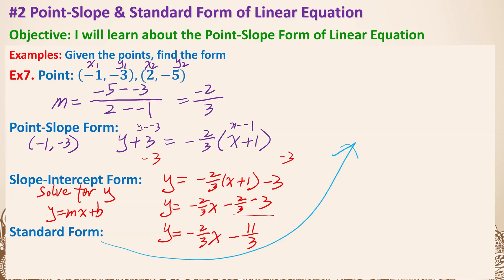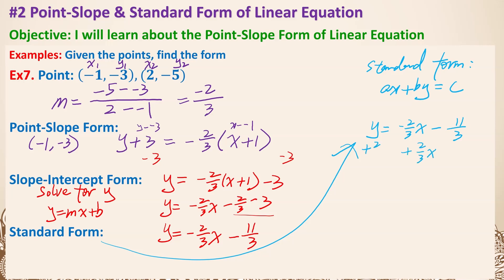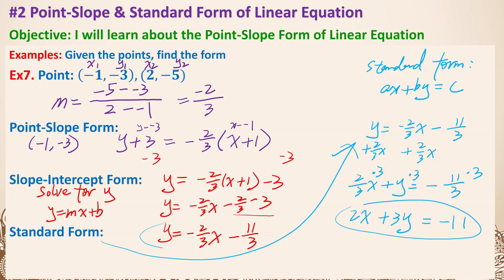For the standard form, start from y equals negative 2 thirds x minus 11 over 3. Add 2 thirds x to both sides: 2 thirds x plus y equals negative 11 over 3. Multiply everything by 3: 2x plus 3y equals negative 11. That is the standard form. We now have all three forms: point-slope, slope-intercept, and standard form. That is everything for this lesson. Thank you.